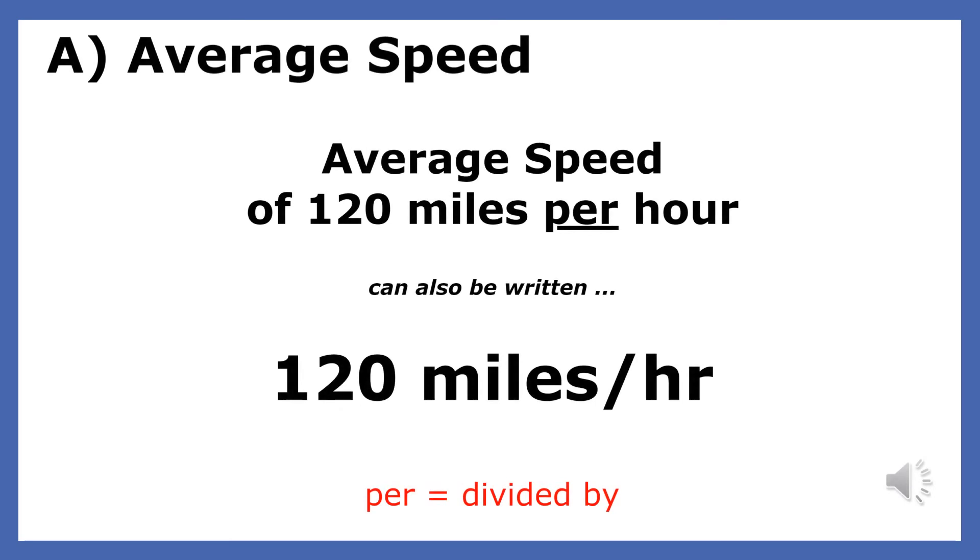Let's look at some words that you already use to describe motion. Speed is the ratio of the distance an object moves per unit time. In the US, we measure speed in miles per hour. For instance, to say that a car is moving at 120 miles per hour means that if the car moved at that speed for one hour, it would travel 120 miles.